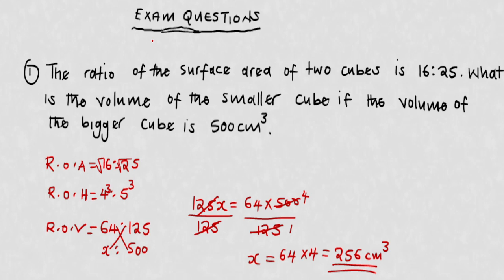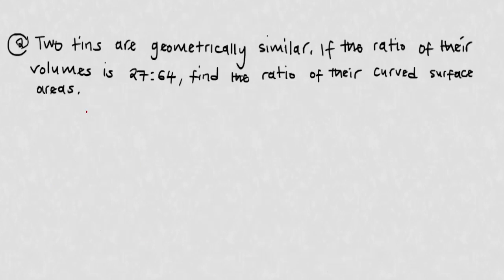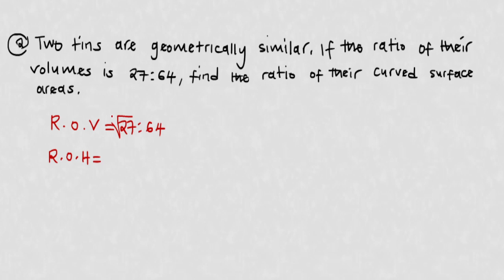Question two: two tins are geometrically similar. The ratio of their volumes is 27 to 64. Before we look at anything, let us go back to the origin, which is the ratio of heights. From volume, we find the cube root — the cube root of 27 and the cube root of 64.